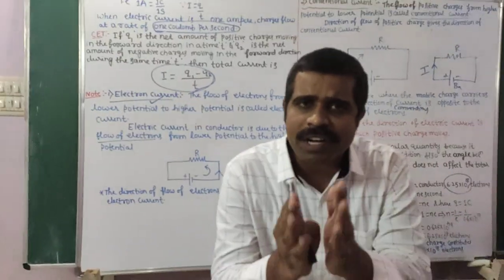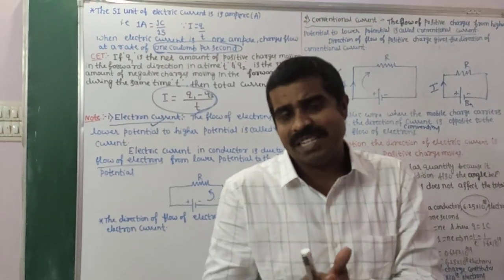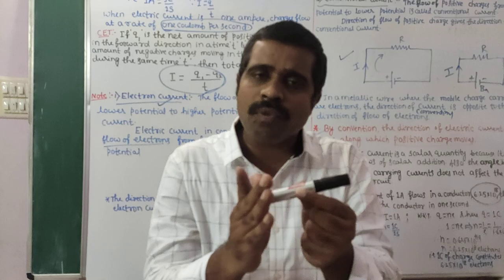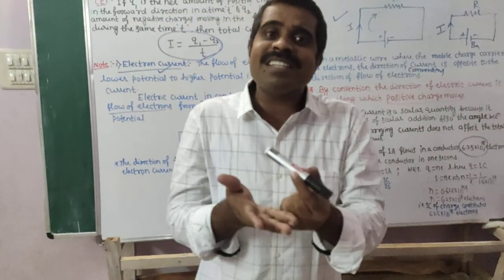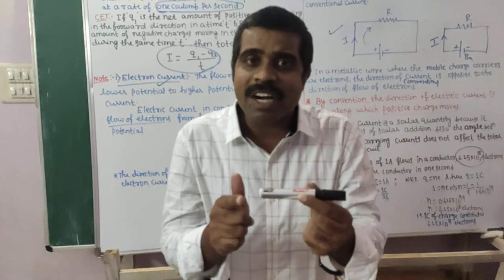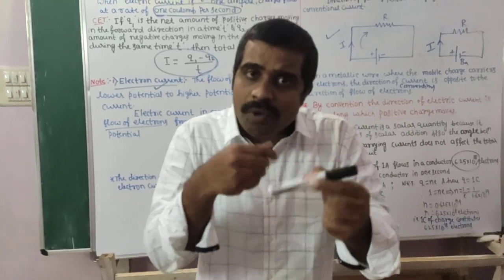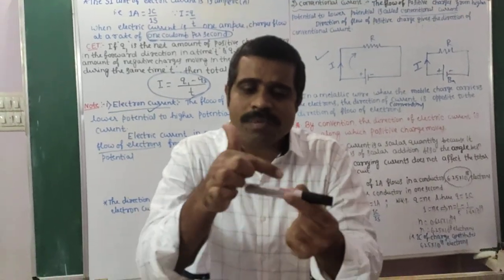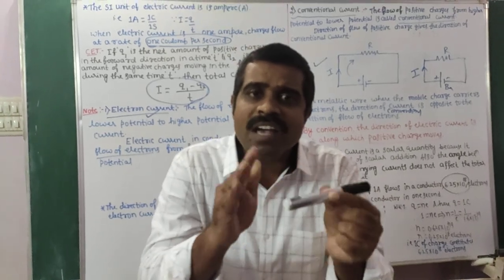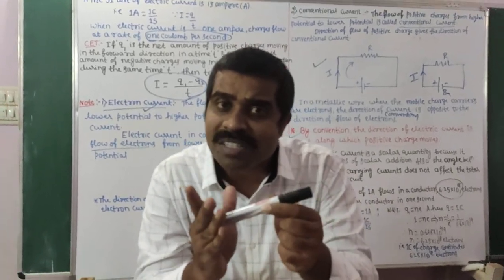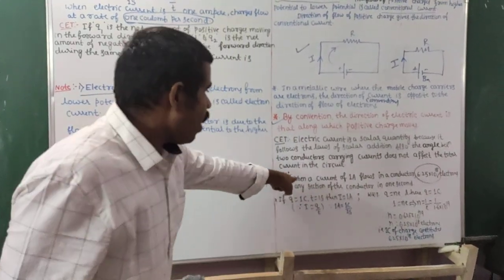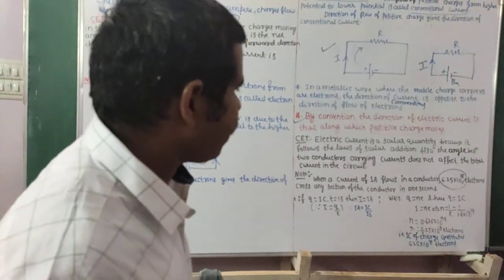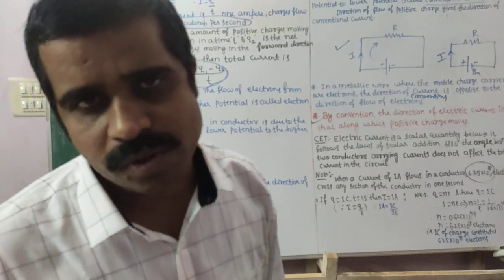Therefore, whenever 1 ampere current flows through a conductor, 6.25 into 10 to the power of 18 electrons cross any section of that conductor in 1 second. This is what we wanted to show. Thank you.